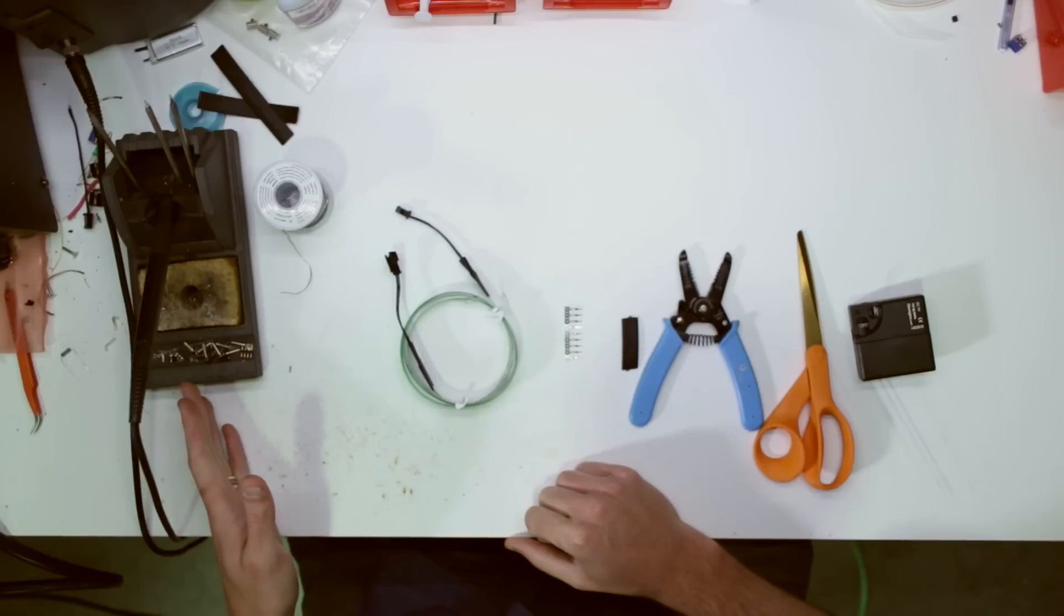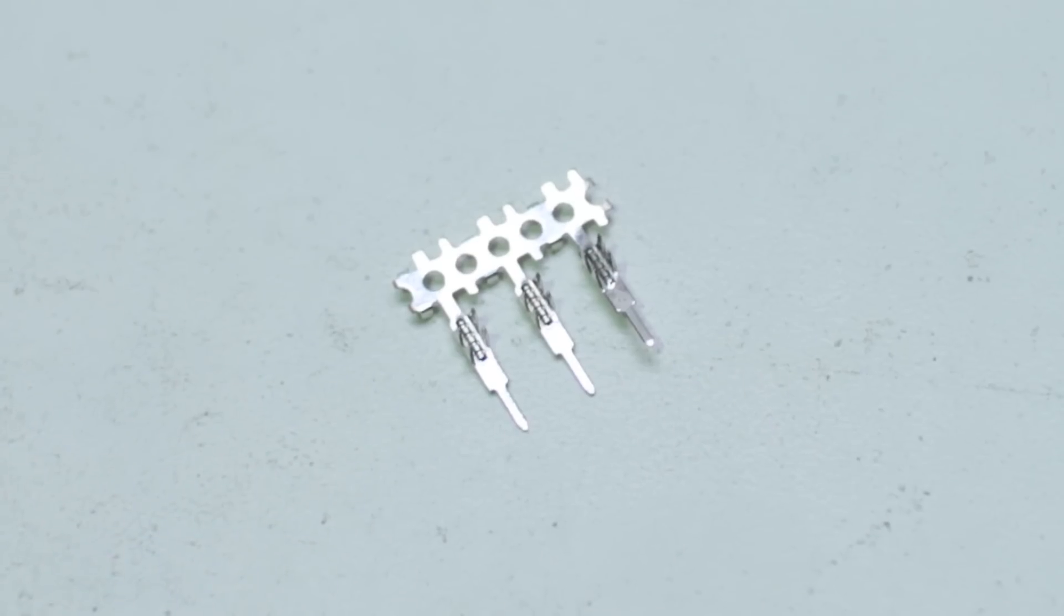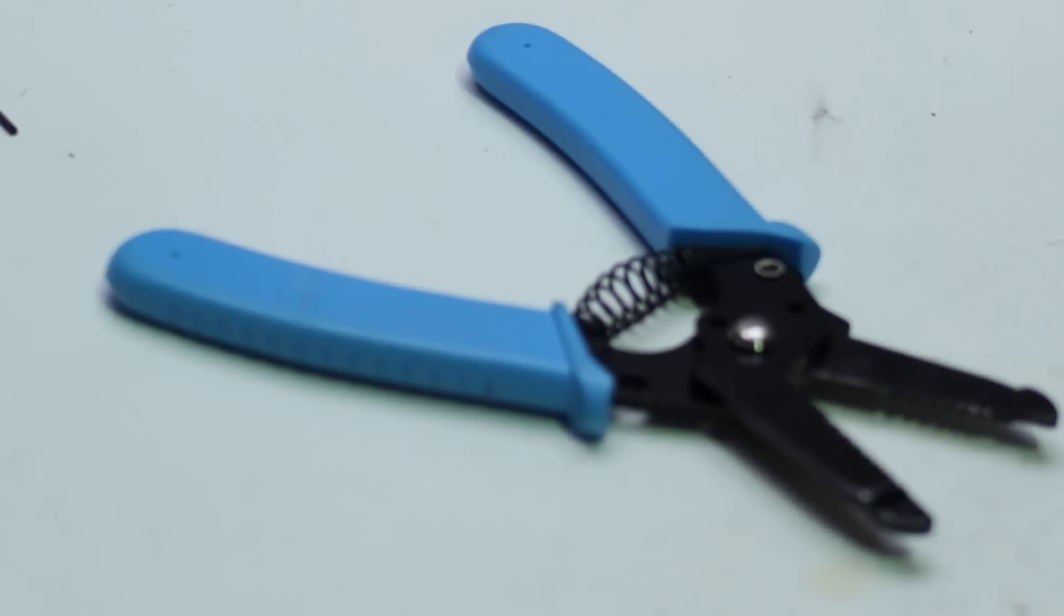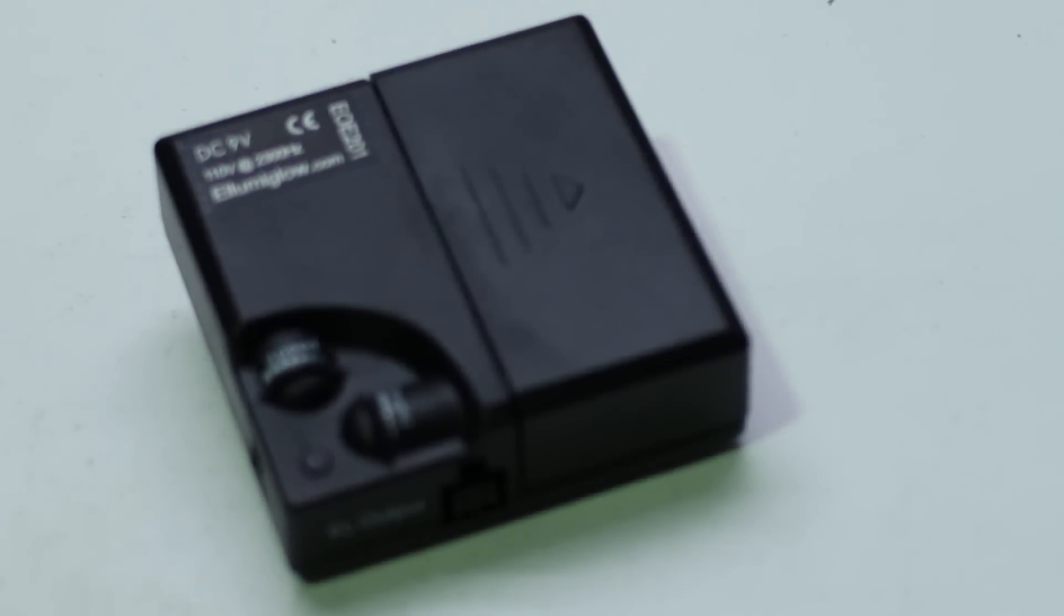The things that you'll need are a soldering iron and solder, your EL tape, some crimp connectors, an easy snap connector, some heat shrink tubing, a pair of wire strippers, a pair of scissors, and a battery pack to test it all.